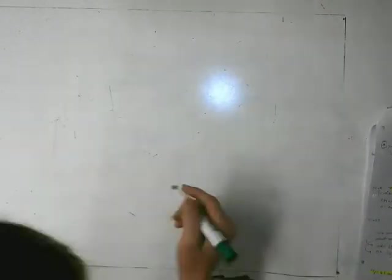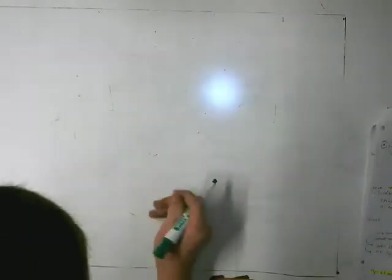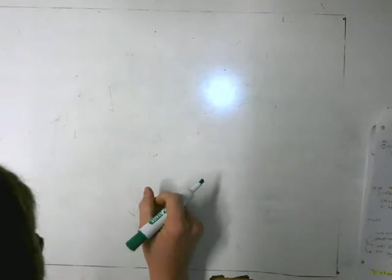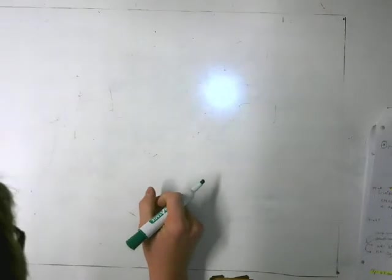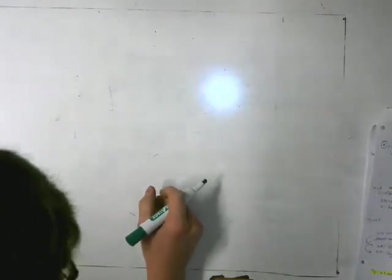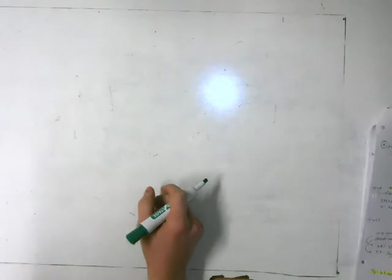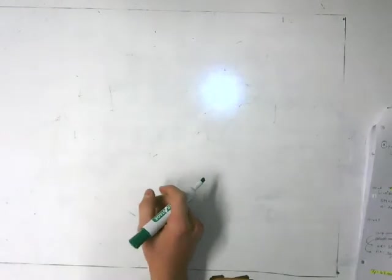I'm Zach Bussey, I'm in fifth period physics — high B physics — Mr. McNeil, in room 206, and I'm going to be talking about a thermodynamics problem today that involves using the ideal gas law.